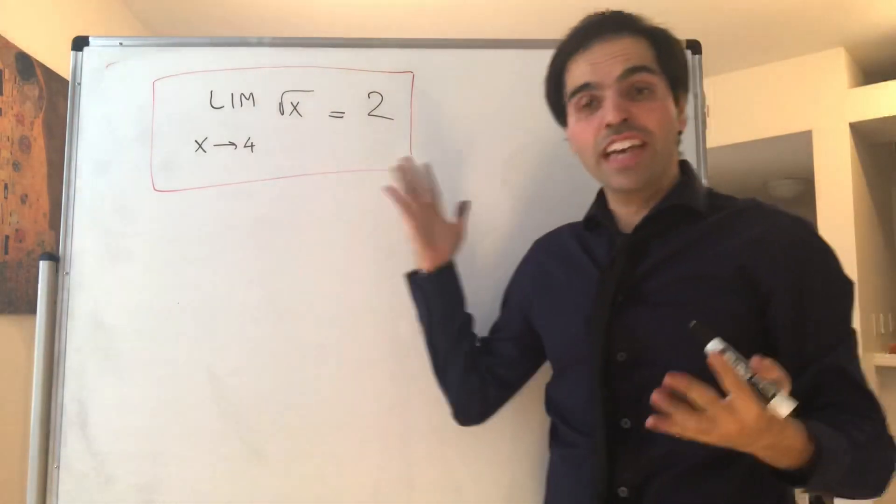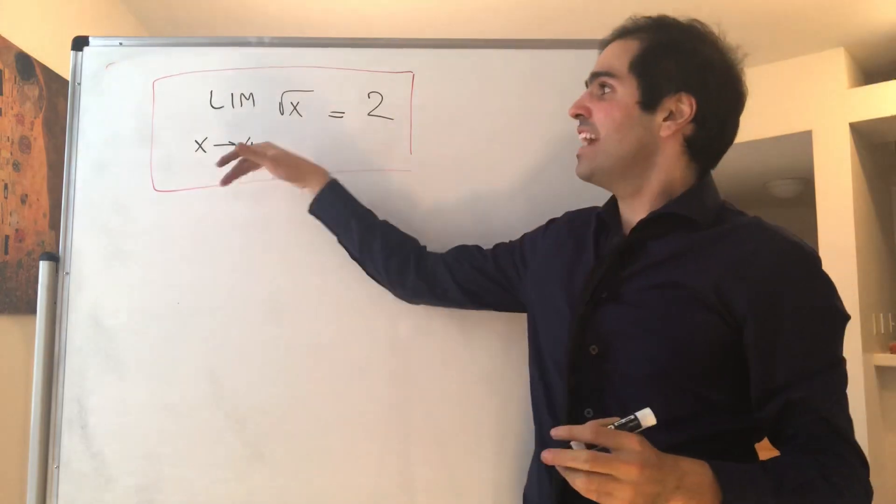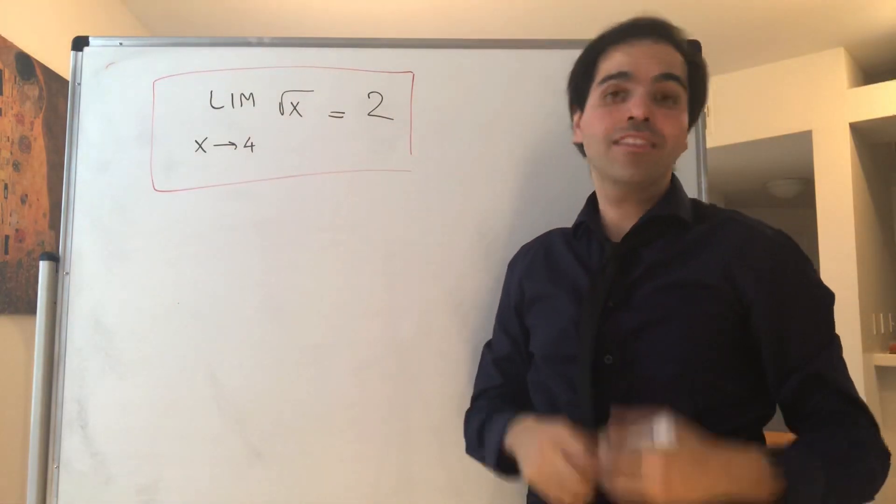All right, thanks for watching. Today I will use epsilon and delta to show that the limit as x goes to 4 of square root of x equals 2.